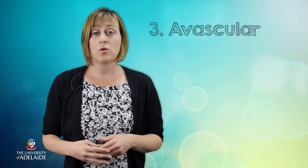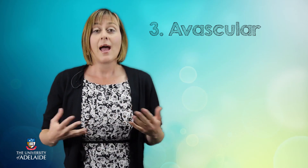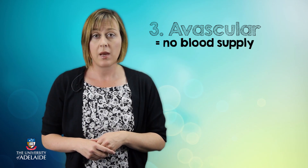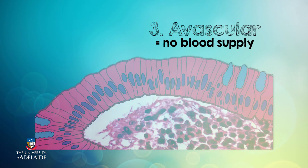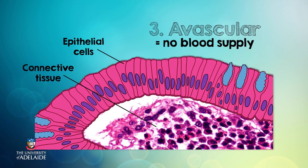Epithelial tissue is also avascular. Avascular means the tissue doesn't have its own blood supply. This means that the epithelial tissue must get its nutrients by diffusion from capillaries which are found in the underlying connective tissue.